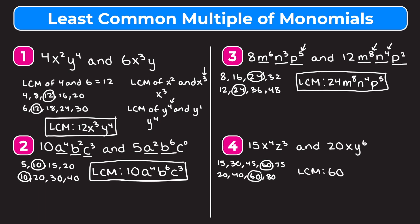Now for the variables: we have x to the fourth in our first monomial and x to the first in our second, so taking the highest exponent gives x to the fourth. We have y to the sixth in our second monomial but no y in our first — since a variable that appears in either monomial must be in the answer, we include y to the sixth. Similarly, z to the third appears in the first monomial and not the second, so we include z to the third. Our least common multiple is 60x to the fourth y to the sixth z to the third.